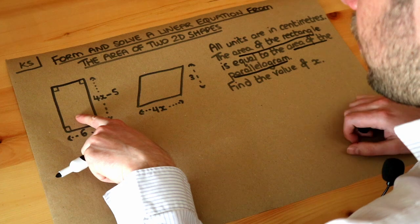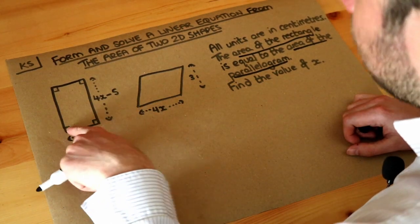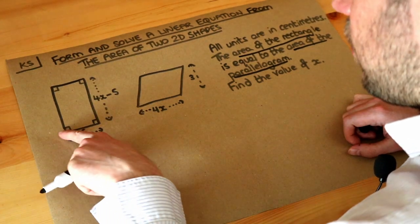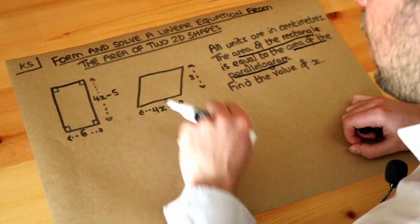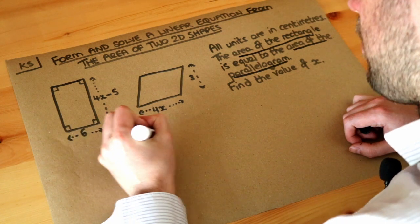So the area of the rectangle, well to find the area of the rectangle you just do length times width. So we're going to do the 6 multiplied by the 4x minus 5.